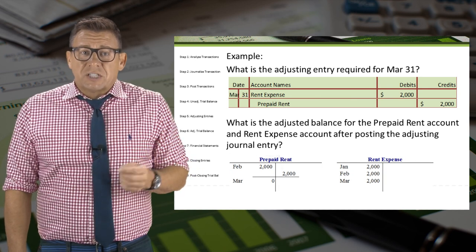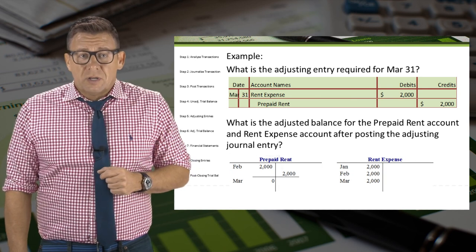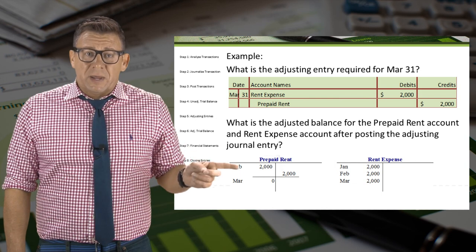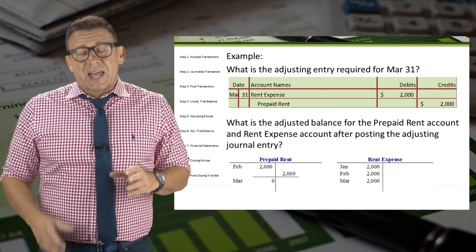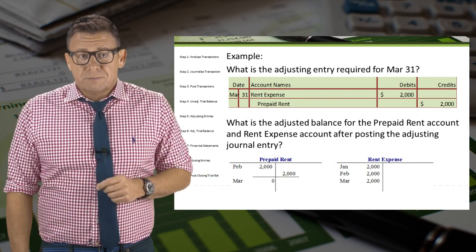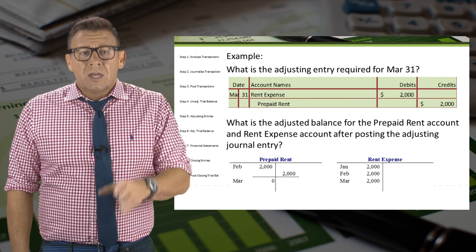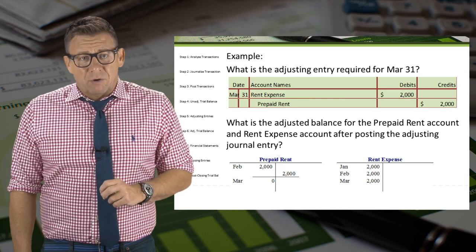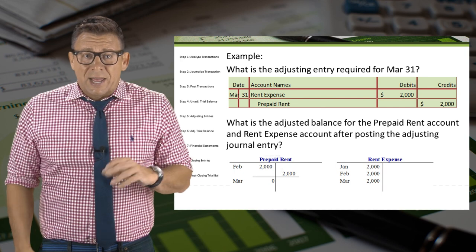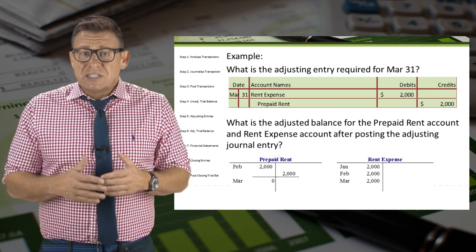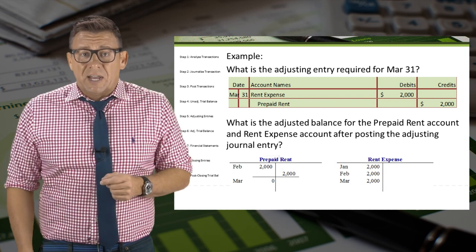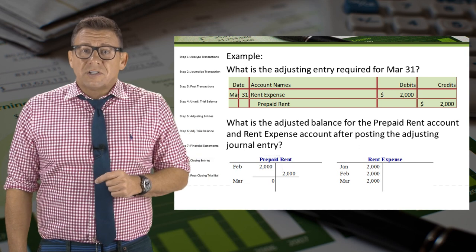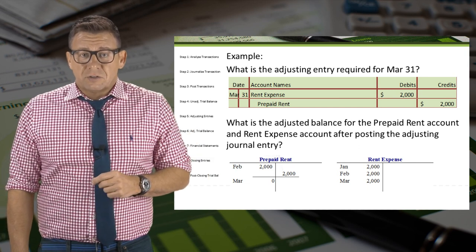Finally, we make the adjustment for March. Again, we debit the expense account, rent expense, and credit the asset account, prepaid rent, for $2,000. Notice now that the prepaid rent account has a zero balance, as Morrissey has no more asset remaining at the end of March. Rent expense for March has also been increased by $2,000.